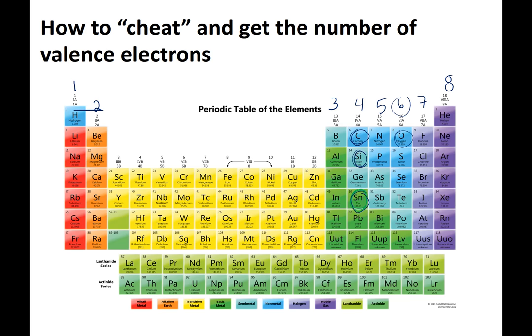Oxygen has six valence electrons, same with sulfur, selenium, tellurium, and polonium. Chlorine has seven. Sodium over here has one. We like to use sodium, magnesium, and chlorine in ionic bonds. We're not going to use the transition metals in this class. Down the columns, those numbers one, two, three, four, five, six, seven, eight tell you the number of valence electrons. You'll notice that the noble gases are in the eight column - very stable because they have a full shell.